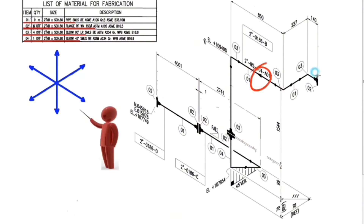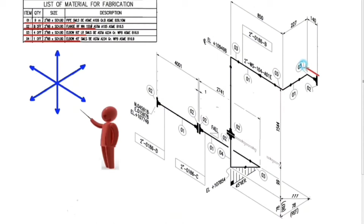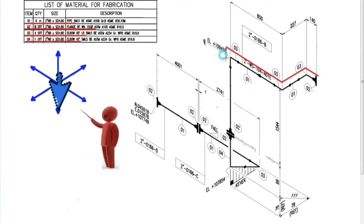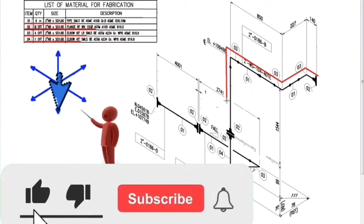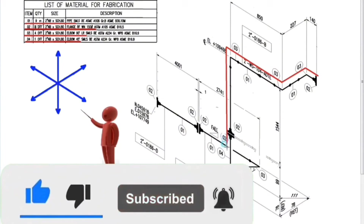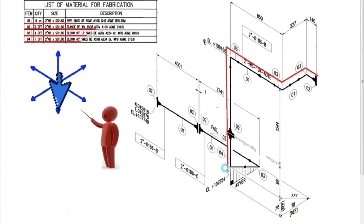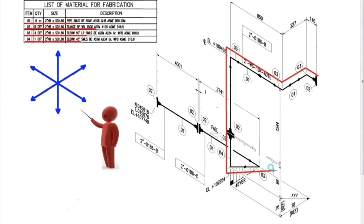Let's read the pipe drawing with the help of these directions. There is an arrow on the pipe, so let's read the pipe drawing in that direction. First, the pipe goes to the north. Then the pipe goes to the west. Then the pipe turns to the north again. After this point, we continue down. From this point it turns east at an angle of 45 degrees. Finally, we are going to the north. We finished reading the pipe drawing.